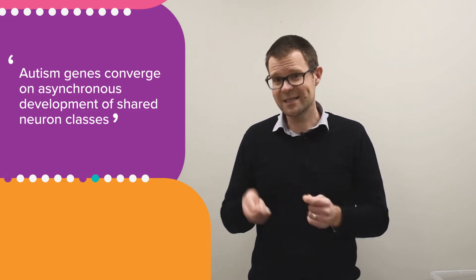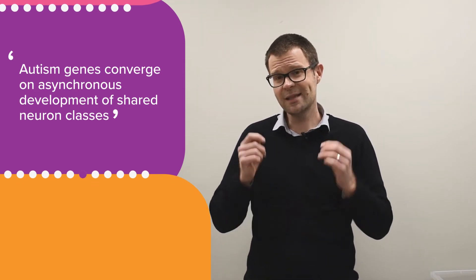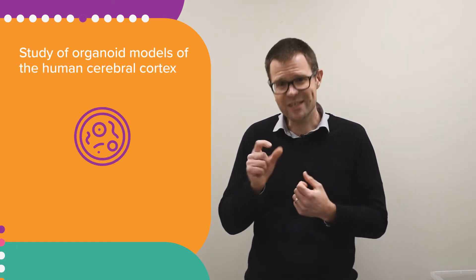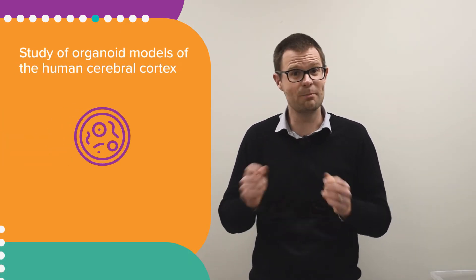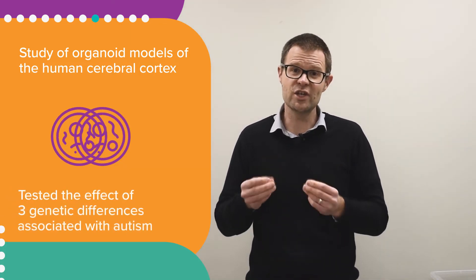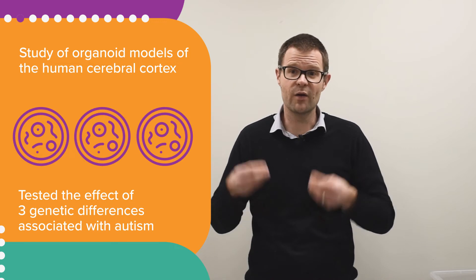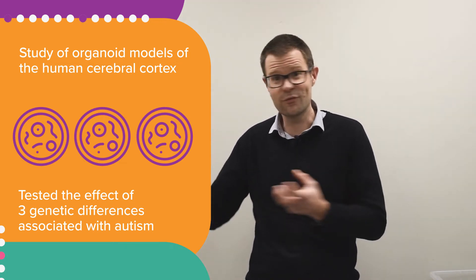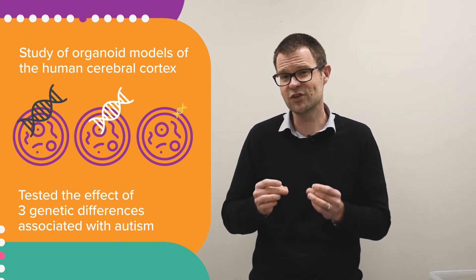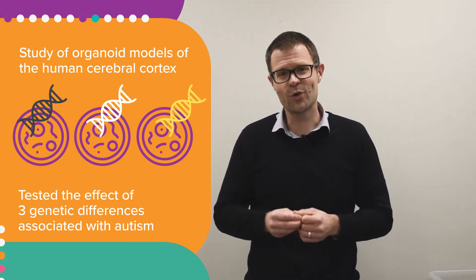So what the study did, it was conducted in a petri dish. In that petri dish they created what are called organoids. Organoids are essentially tiny microscopic mini brains, and what they did is they tested the effect of three genetic differences which we know are involved in the development of autism in different individuals on the organoids.